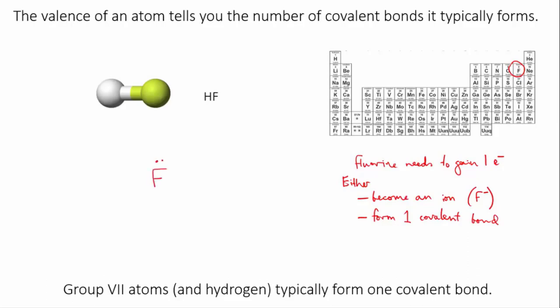When it forms a covalent bond, fluorine donates 1 electron to the bond, and the other atom – here it's hydrogen – also donates 1. This forms the pair of bonding electrons that make up a single bond.